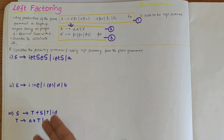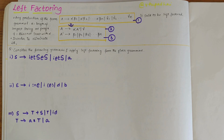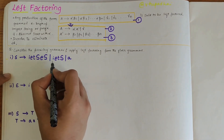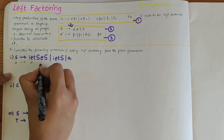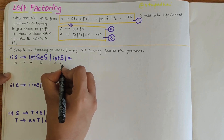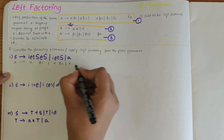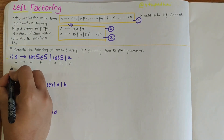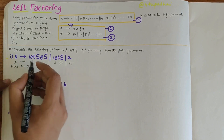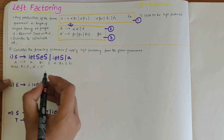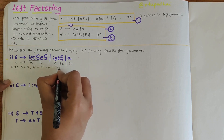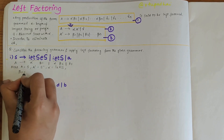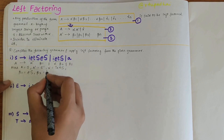Now let's consider the following grammars and eliminate the left factoring. First, let's look at question one: S derives ietS eS | ietS | a. Comparing this with equation one — A derives alpha beta1 | alpha beta2 | ... | gamma1 — here A is S, A' is S', alpha is ietS, and beta1 is eS.